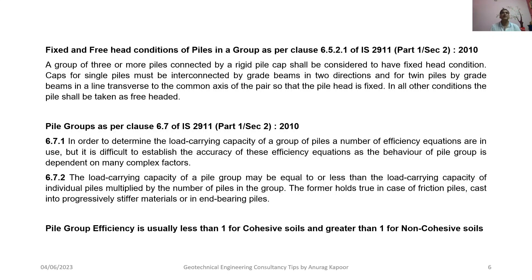Regarding fixed and free head conditions of piles in a group: as per Clause 6.5.2.1 of IS 2911 Part 1 Section 2 (2010), a group of three or more piles connected by a rigid pile cap shall be considered to have a fixed head condition. Caps for single piles must be interconnected by grade beams in two directions, and for twin piles by grade beams in a line transverse to the common axis of the pair. In all other conditions, the pile shall be taken as free-headed. This factor comes into play when calculating the lateral load carrying capacity of piles after compression and uplift capacities have been calculated.